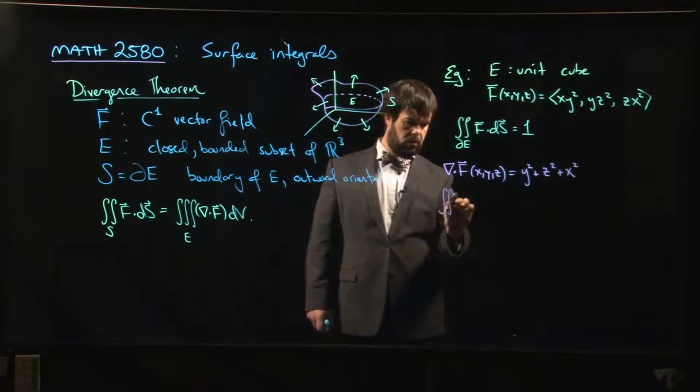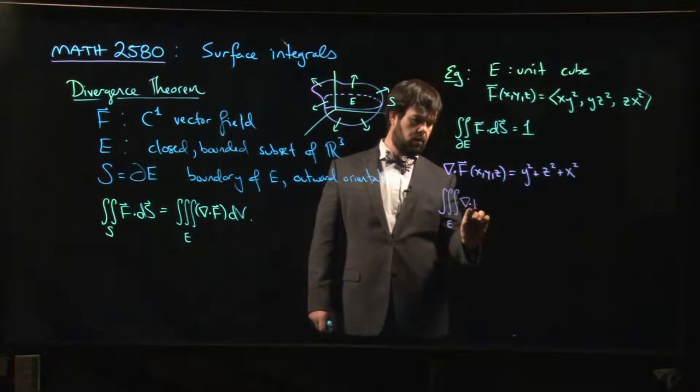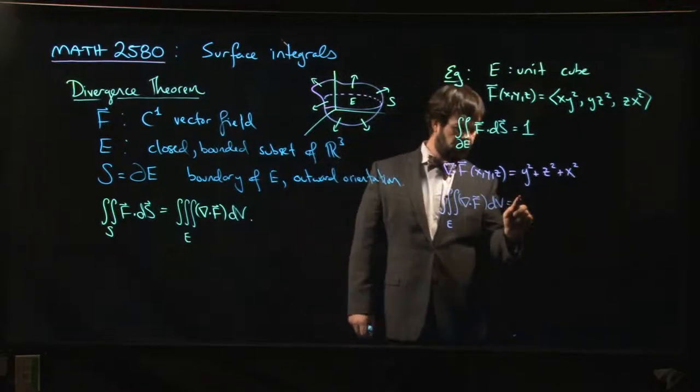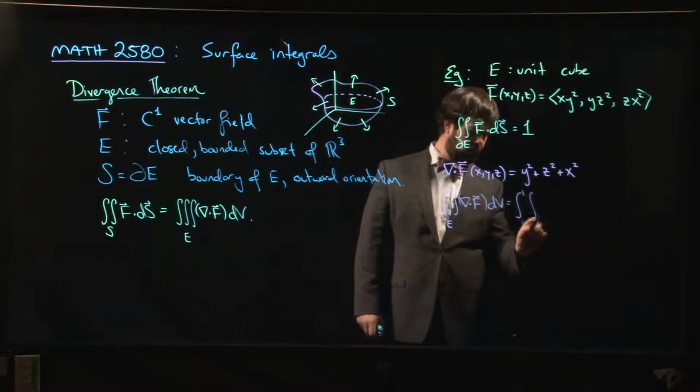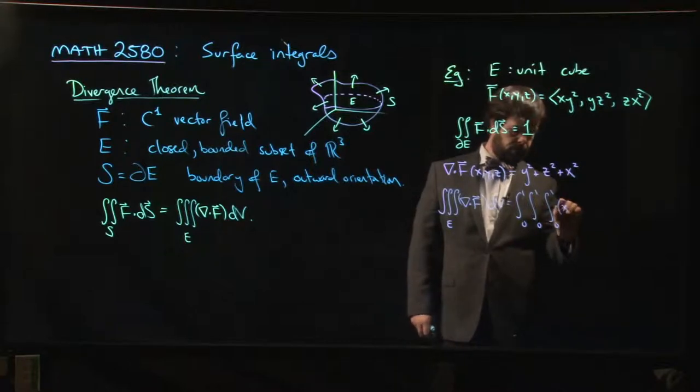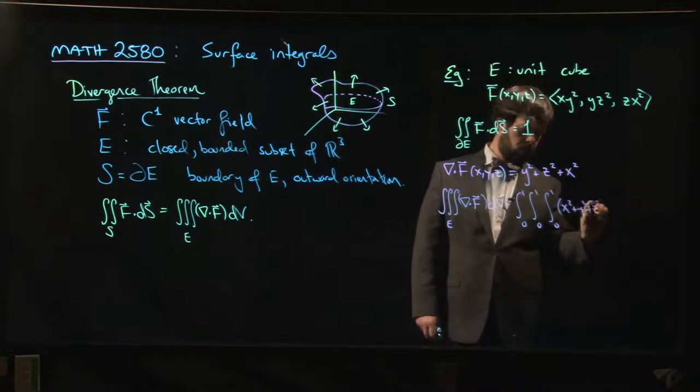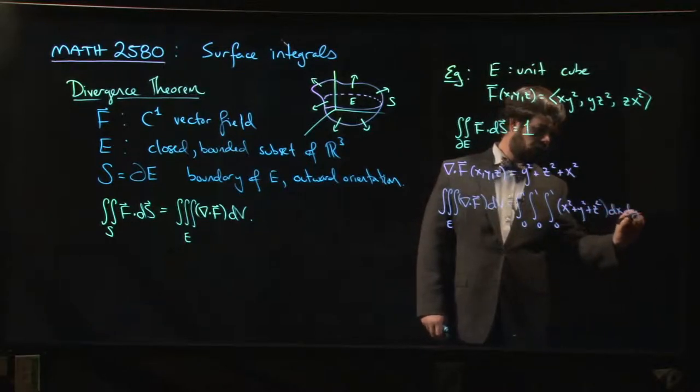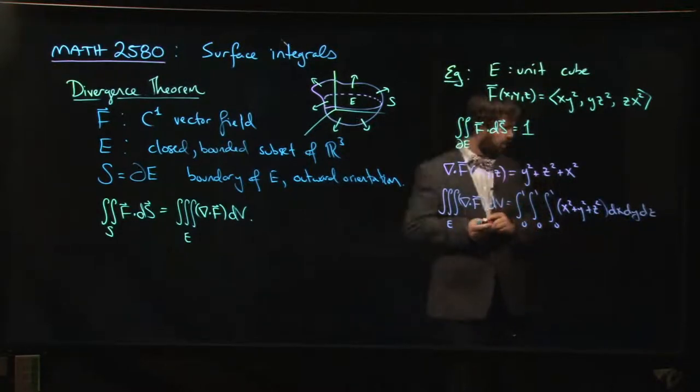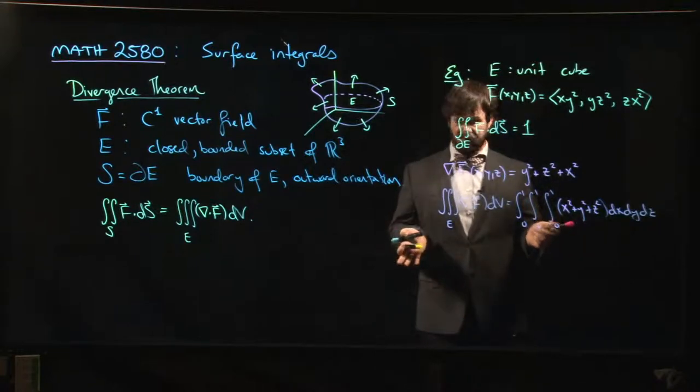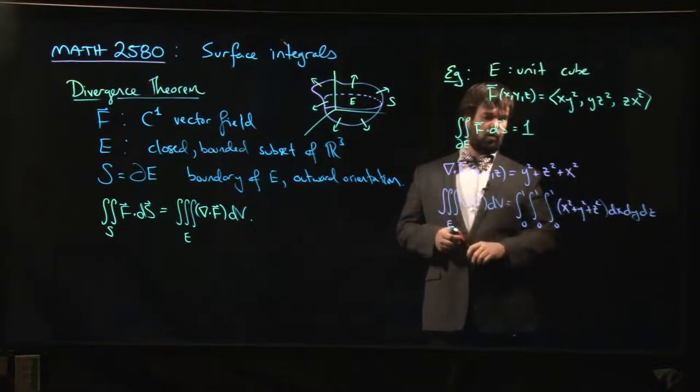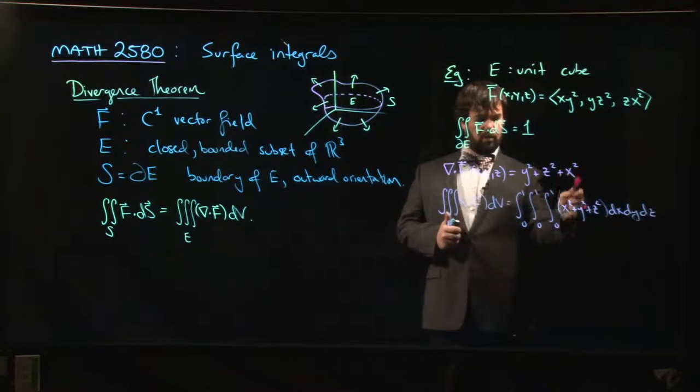And we want to do the integral over E of the divergence. But our region is a cube, so this is, as triple integrals go, it's a relatively simple one. And I'll let you work it out. I don't think it's a good use of our time. And also, it's pretty straightforward, right? We do the x-integral here, we're going to get one-third x³, x, y², x, z². So when we go from zero to one, we're going to get one-third + y² + z².